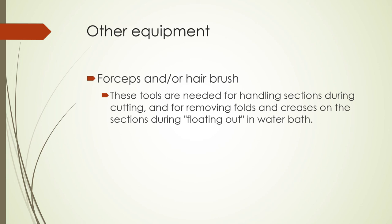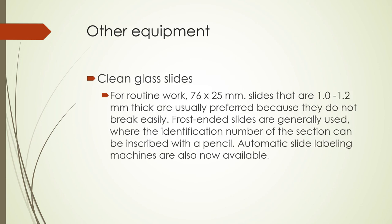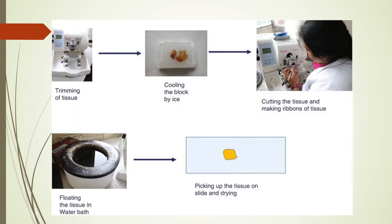Next, you have your forceps and or hairbrush. These tools are needed for handling sections during cutting and for removing folds and creases on sections during floating out in the water bath. And the last piece of equipment is, of course, clean glass slides. For routine work, 76 by 25 millimeter slides that are 1.0 to 1.2 millimeters thick are usually preferred because they do not break easily. Frosted-end slides are generally used where the identification number of the section can be inscribed with a pencil. Automatic slide labeling machines are also available.